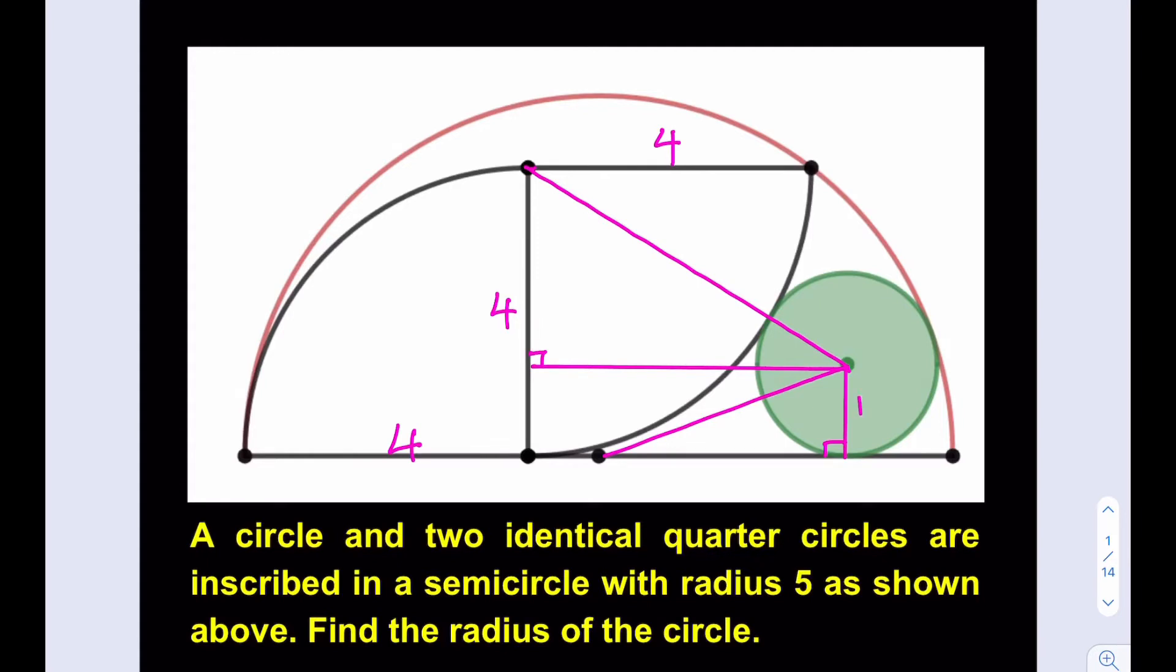Suppose the radius of the circle is r and we know this is also r. So this piece is going to be 4 minus r. This is going to be 4 and this is going to be r as well. We kind of have a right triangle here. Let me shade that. That's one of the right triangles we're going to use. We do not know this length yet because we don't know this distance. So I'm going to call this x. Now what about the hypotenuse here?